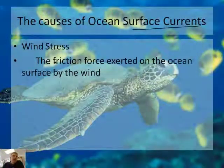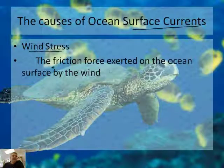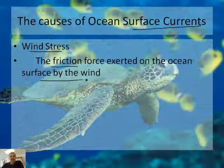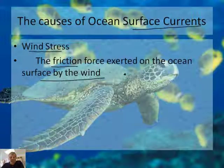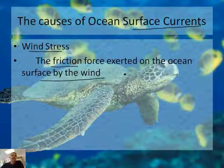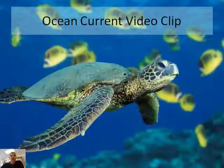What causes these surface currents? Well, the answer is wind stress. Wind stress is the friction force exerted on the ocean surface by the wind. So basically, the wind blows on the Earth and the wind causes the surface currents. It's pretty simple — the wind is pushing the water.